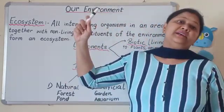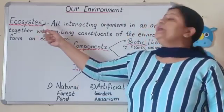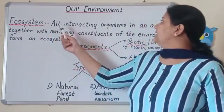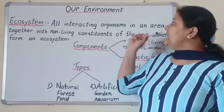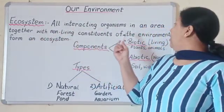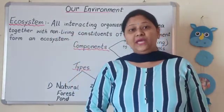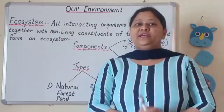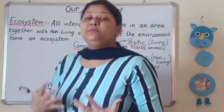First thing about the environment we have to learn is ecosystem. What is an ecosystem? An ecosystem is when all the interacting organisms in an area, together with non-living constituents of the environment, form an ecosystem. So it is basically the interaction of living and non-living components.